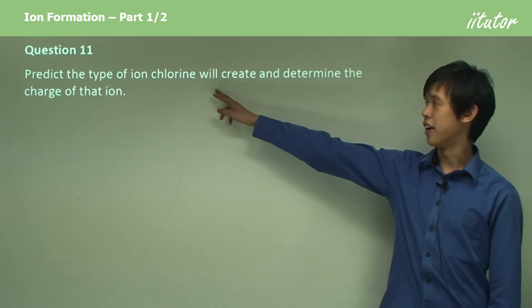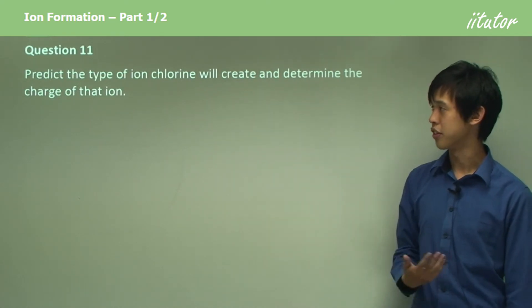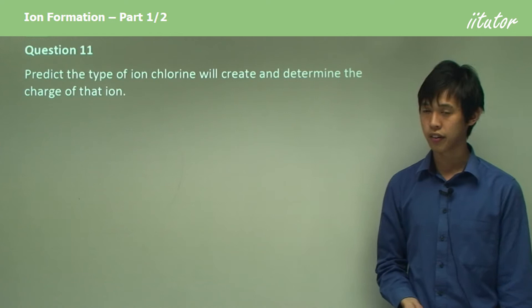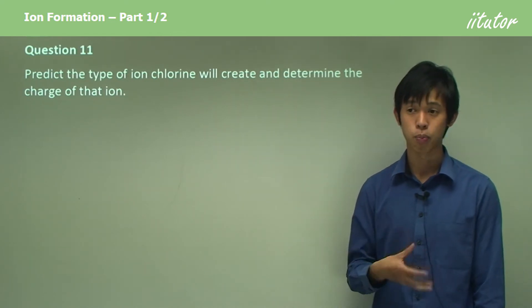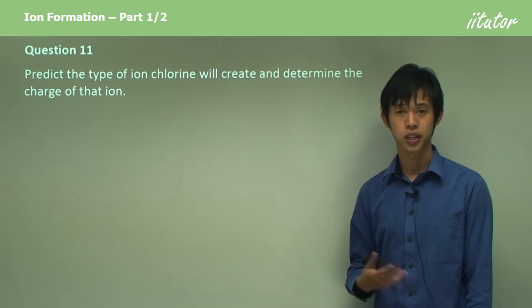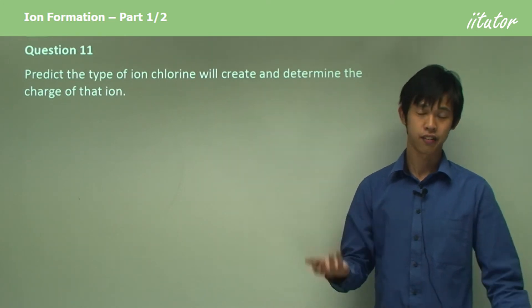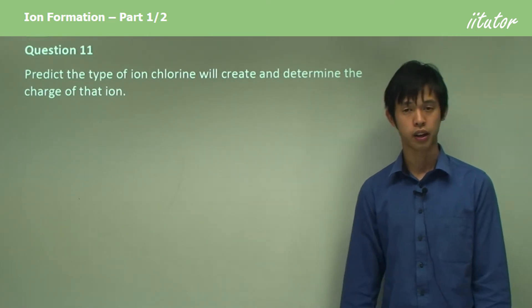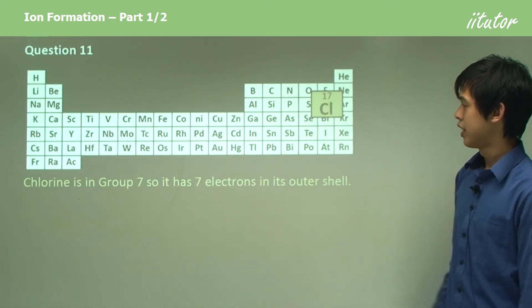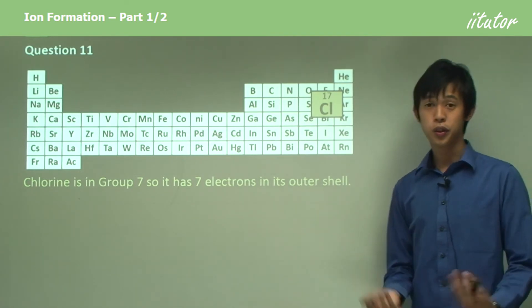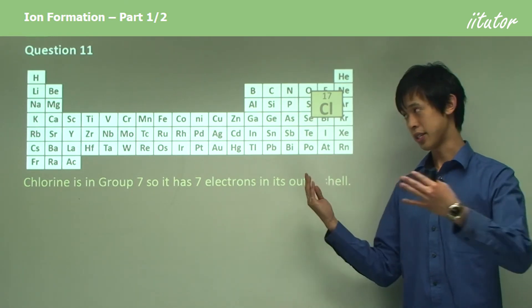So predict the type of ion chlorine will create and determine the charge of that ion. What kind of charge, what type of ion will chlorine form and how big a charge would it have? Here's our lovely periodic table once again. You can see that chlorine, if you look on your own periodic table at home or you can look at this one, is in group 7.